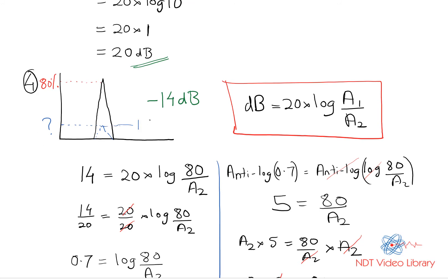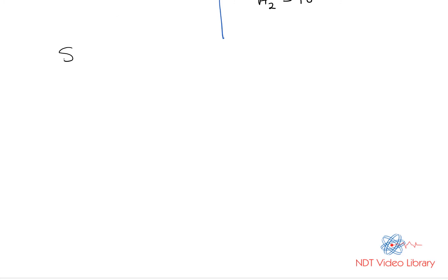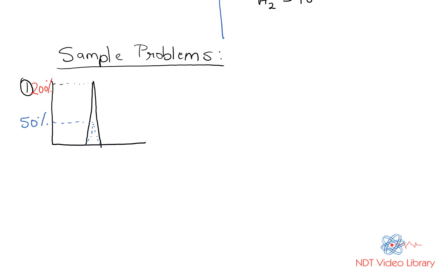Now let's give some sample problems to solve and you're going to write the answers in the comments below. First problem says 200% signal amplitude initially, I bring it down to 50%. How many dBs did I lose?